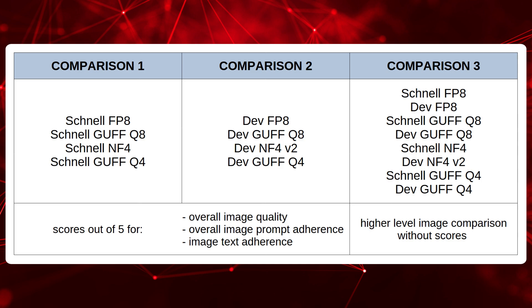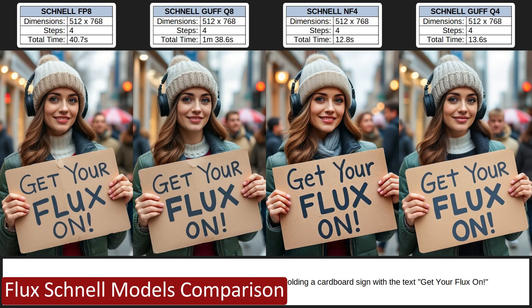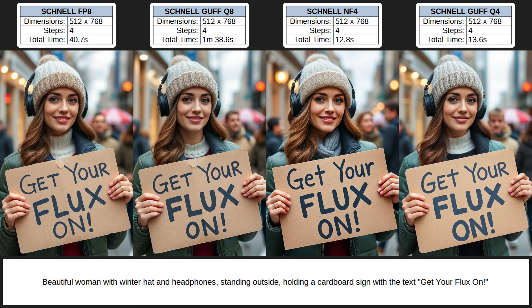If you're only interested in a specific comparison section, I've left the timestamps for each section in the description below so you can jump straight to it. This is the first Schnell model image comparison. You can see the model generation key details above each image and the same prompt used for all images at the bottom. I used four sampling steps for all the Schnell images.